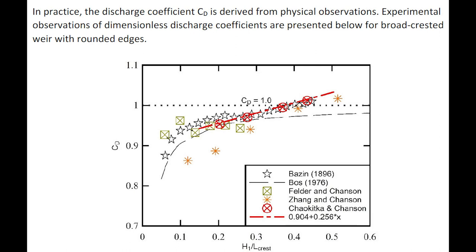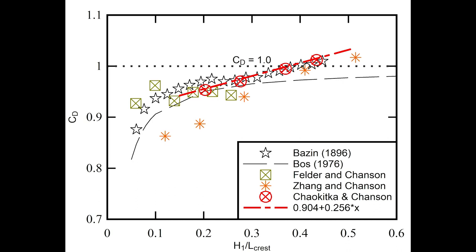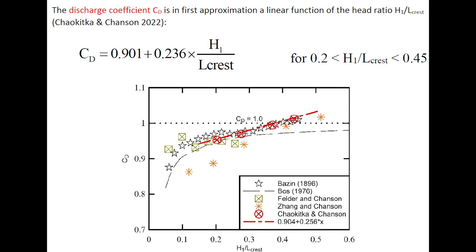In practice, the discharge coefficient Cd is derived from physical observations. Typical observations of dimensionless discharge coefficients are presented below for broad-crested weirs with rounded edges. The discharge coefficient is, in first approximation, a linear function of the head ratio H1 over Lcrest.